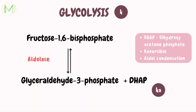In step 4, a reversible reaction occurs where fructose-1,6-bisphosphate, a 6-carbon compound, gets cleaved into two 3-carbon units: glyceraldehyde-3-phosphate and dihydroxyacetone phosphate. This reaction is a backward reaction of aldol condensation, and hence the enzyme is aldolase. In sub-step 4a, the dihydroxyacetone phosphate is isomerized to glyceraldehyde-3-phosphate by an enzyme called phosphotrioisomerase. Therefore, glucose is split into two molecules of glyceraldehyde-3-phosphate. Steps 4 and 4a are together called the splitting phase.